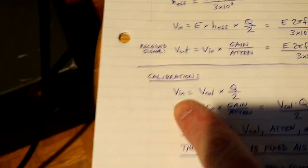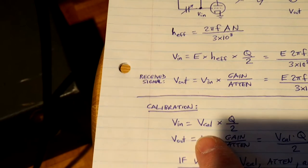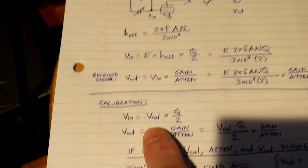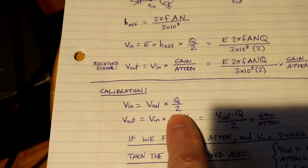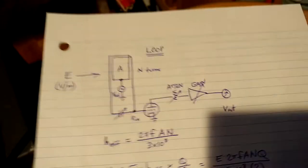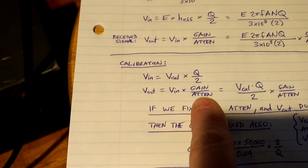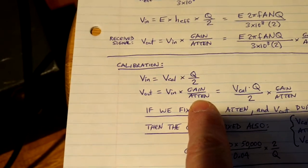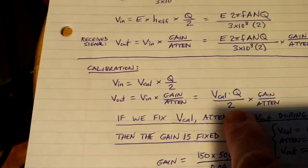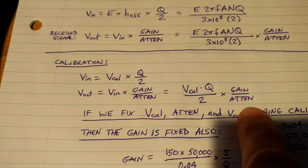So for calibration, the input voltage into the mixer is the calibrated voltage at the base of the loop, and again, that voltage is subject to the same Q, and half of it is applied. So calculating the output from the calibration signal, V out is V in times the gain or the attenuation factor. So combining the terms, that's V cal times Q over 2 times the gain or the attenuation factor.